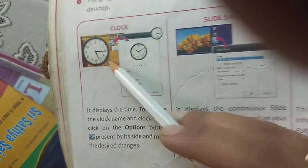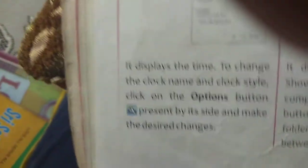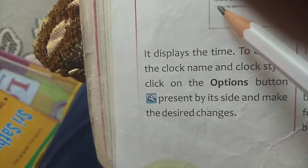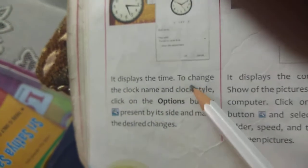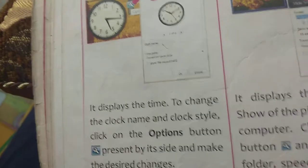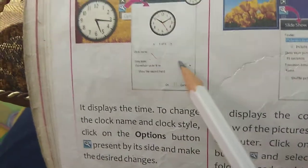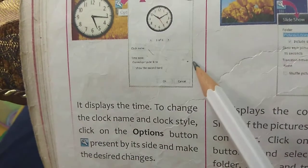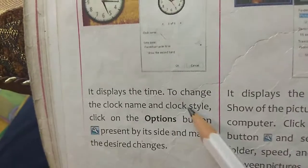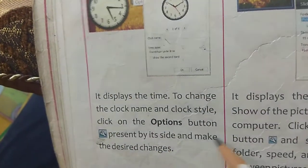Examples are given here — clock will look like this. The clock shows the clock name, time zone, and it displays the time. To change the clock name and time zone, you click on the options button — that is this button present by its side — and make the desired changes. You can change the time zone from the drop-down arrow, then press OK.